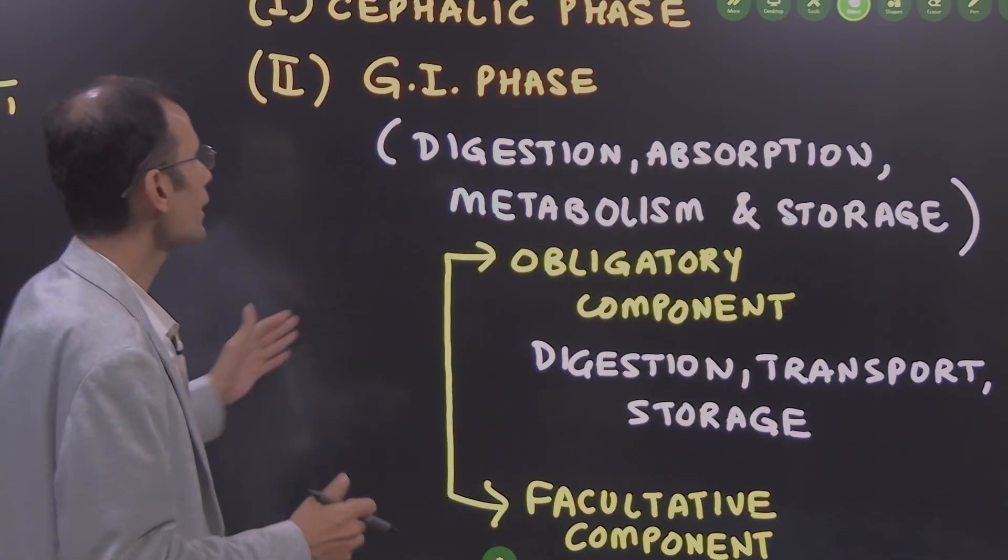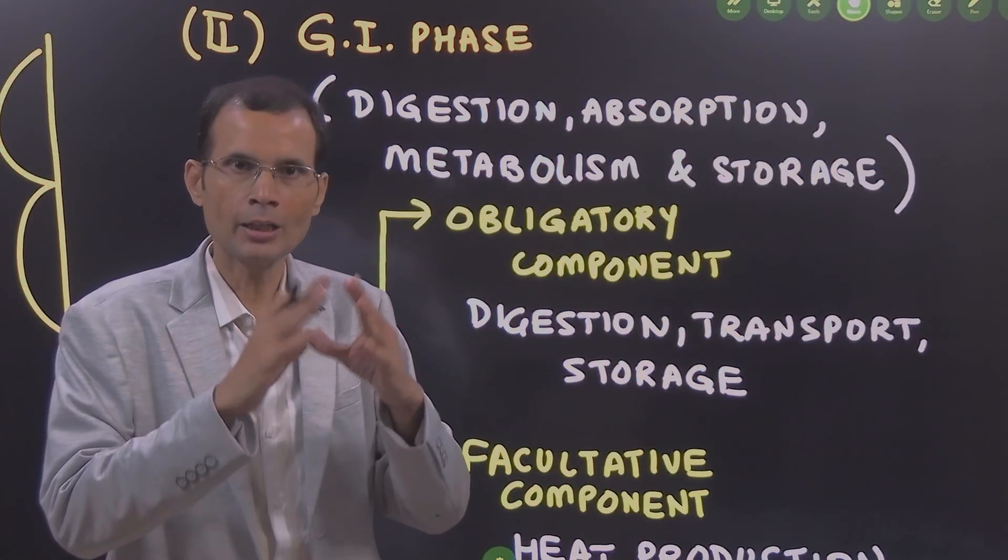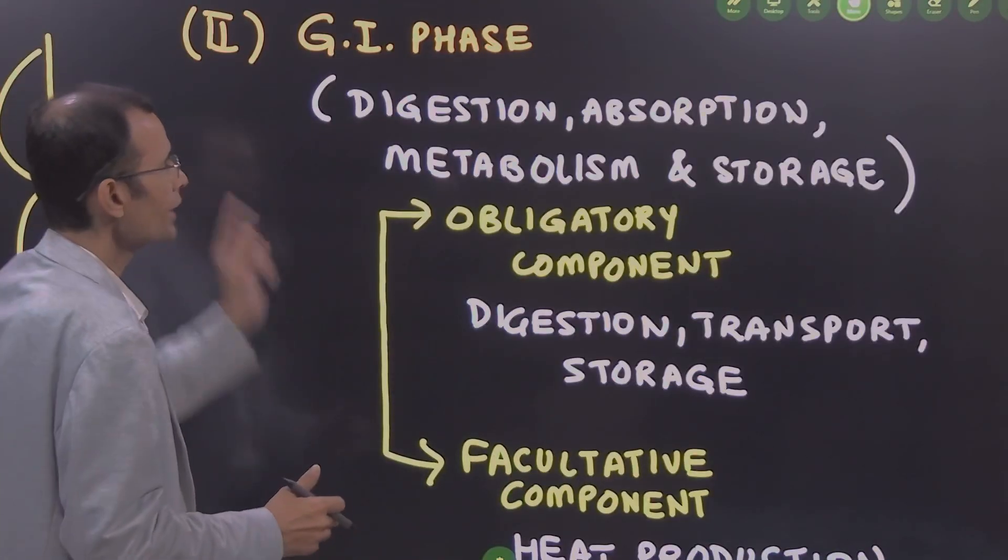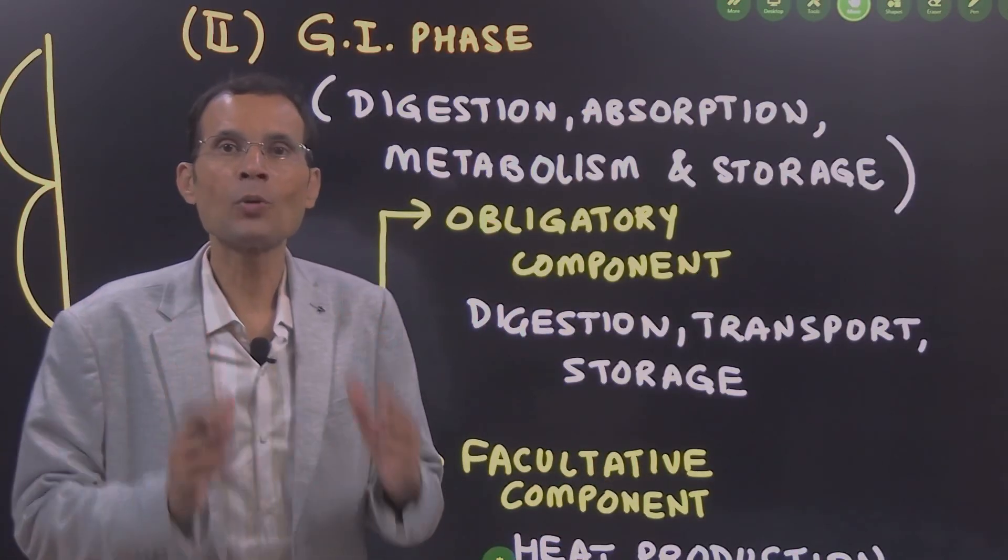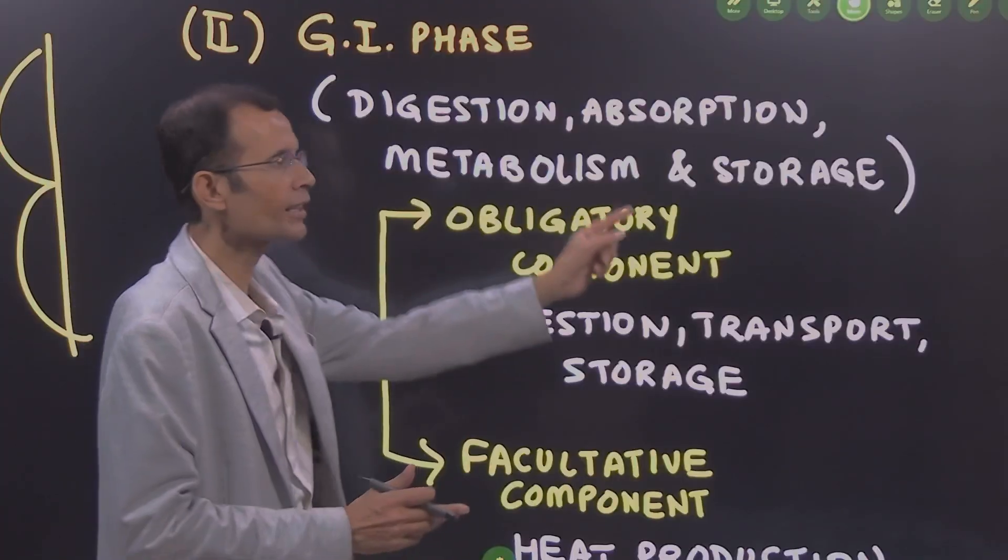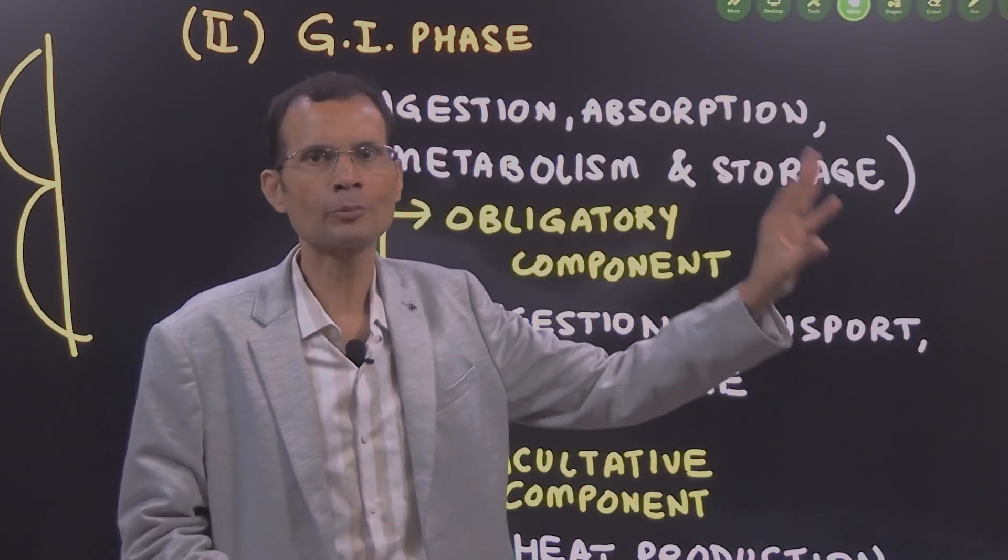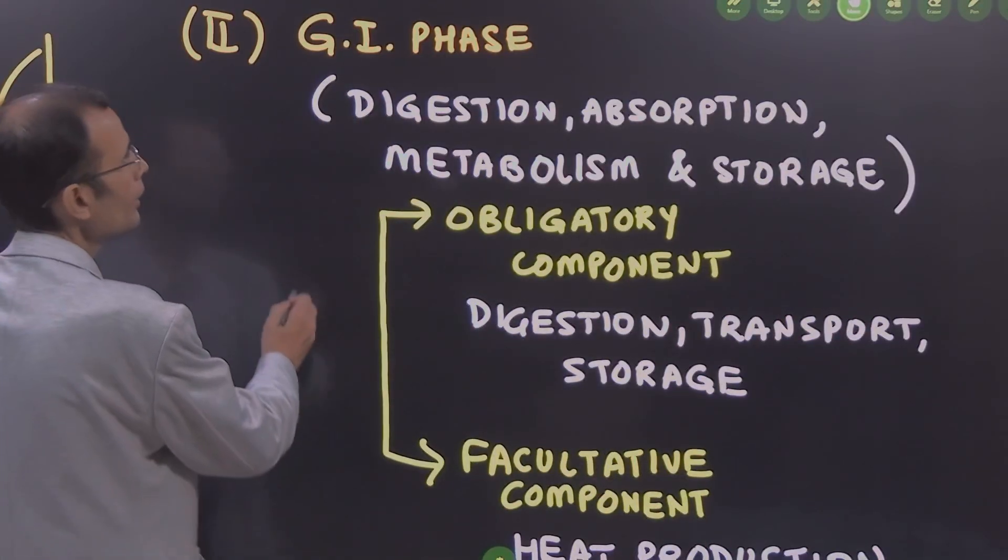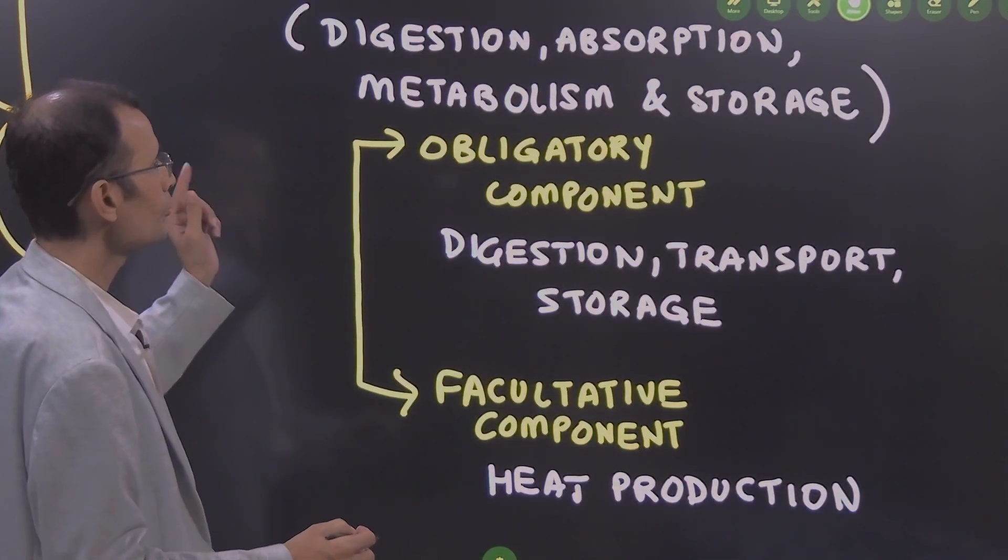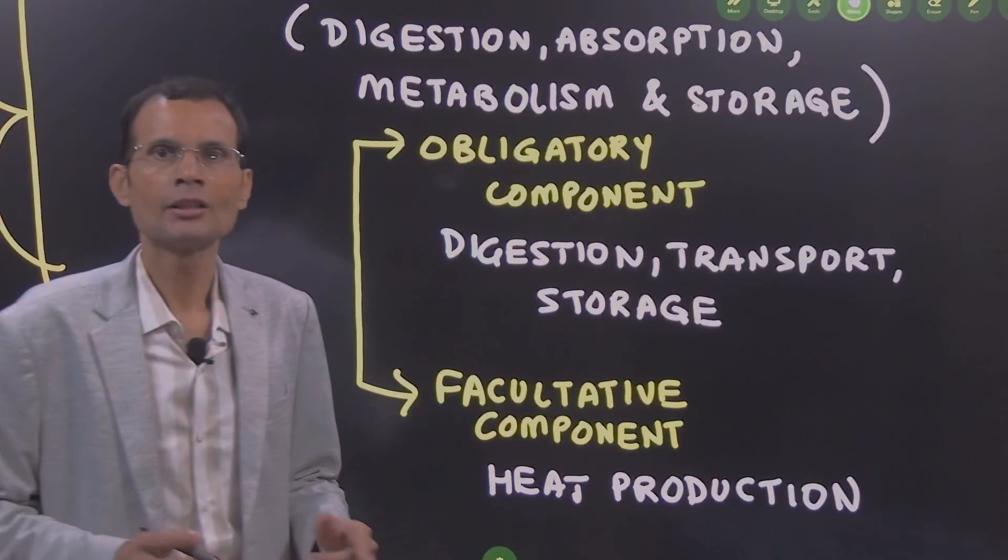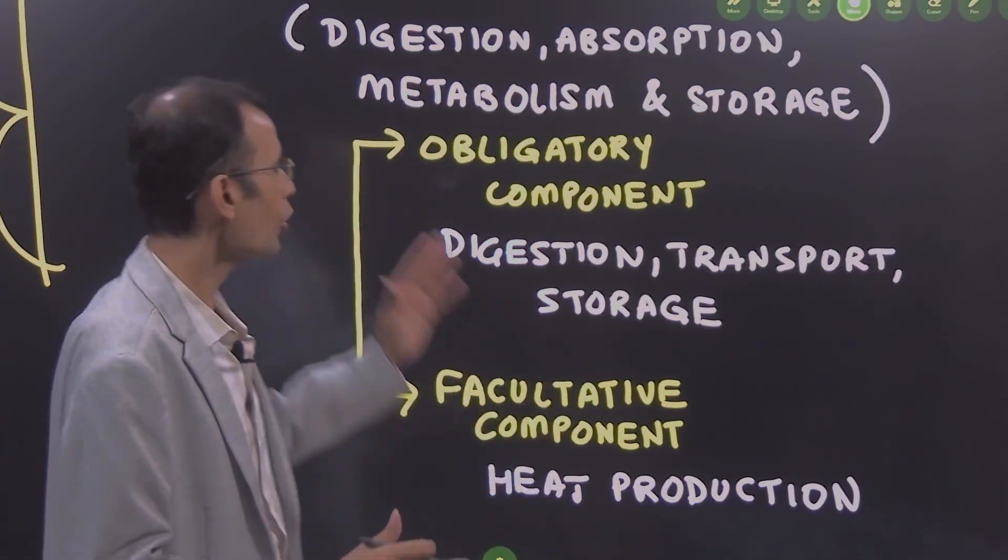And then there is GI phase, gastrointestinal phase where digestion. Now this is the most important part that you should know. This is the main part in your answer. Digestion, absorption, metabolism and storage of these nutrients requires ATPs and therefore these processes will break down the ATPs and then eventually the ATPs will be generated from the nutrients. Now in this GI phase, there are two components. Obligatory component which is for digestion, transport and storage. This is a must. This is a certain fraction which has to happen and that is called as obligatory component.